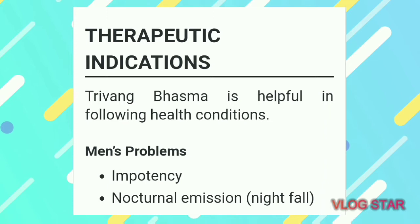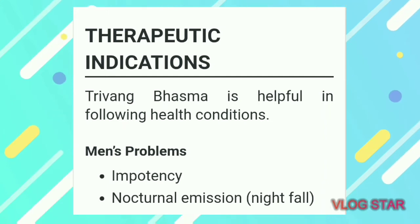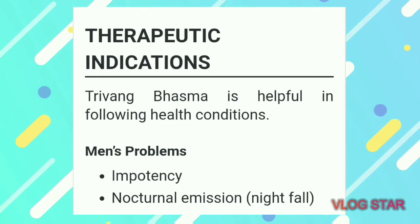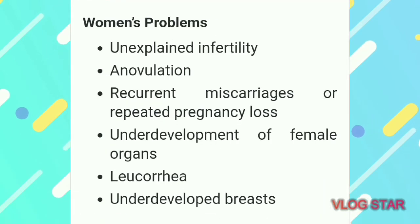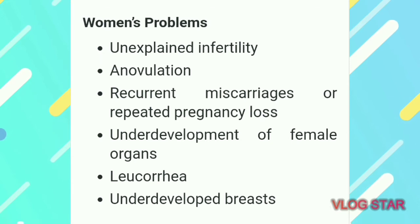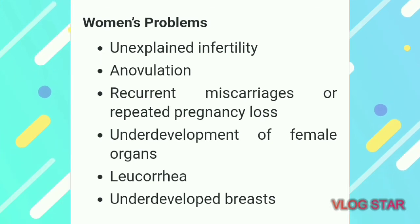There are three main therapeutic ingredients: Naag, Vang, and Yashad Basan. This medicine is used in women's infertility-related conditions, leucorrhea, and underdeveloped breast issues.